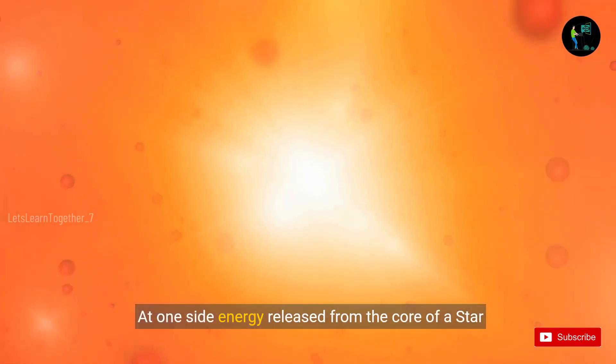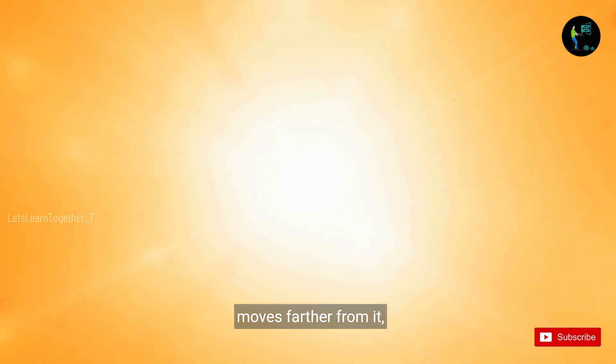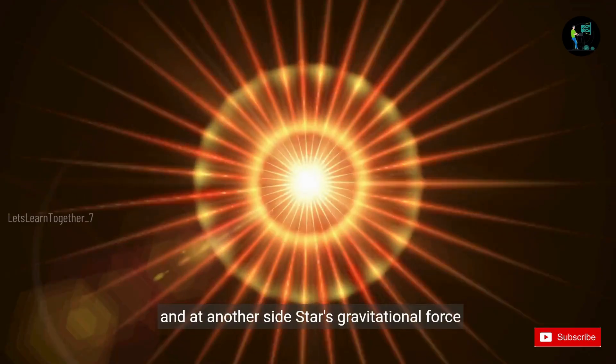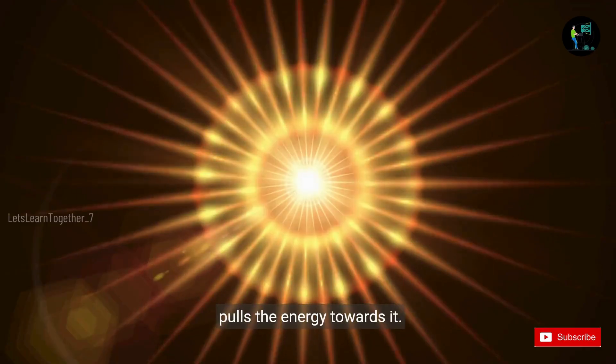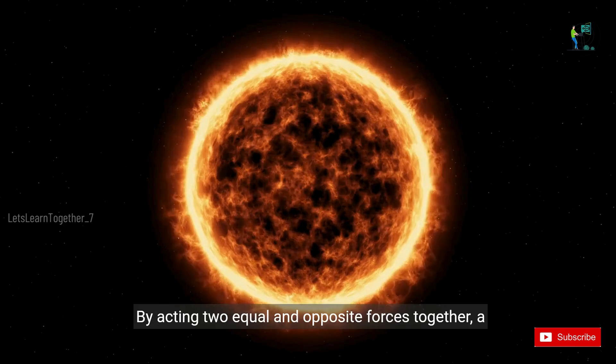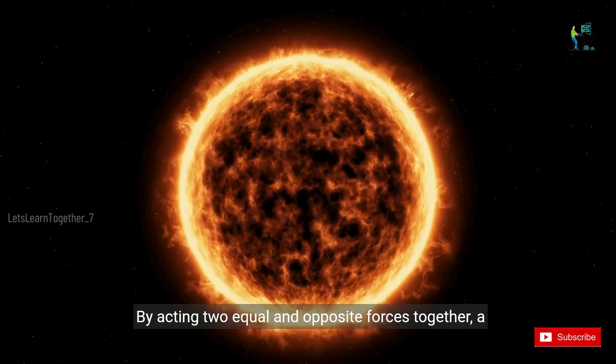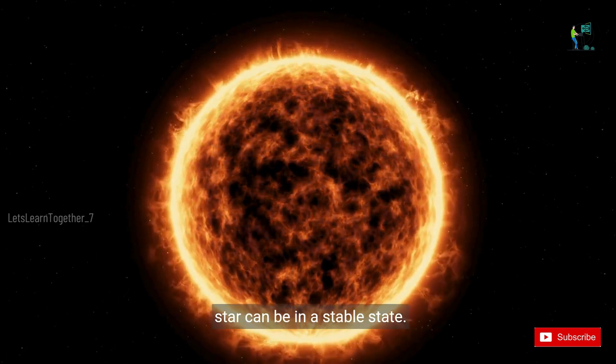At one side, energy released from the core of a star moves farther from it. And at another side, the star's gravitational force pulls the energy towards it. By acting two equal and opposite forces together, a star can be in a stable state.